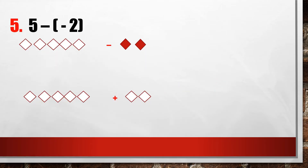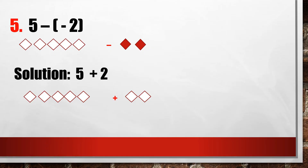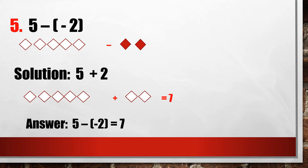Number 5: 5 minus negative 2. We have positive 5 as 5 non-colored tiles minus 2 colored tiles. Change negative 2 into positive 2 — the minus sign becomes plus. So it becomes 5 plus 2: using algebra tiles, 5 non-colored tiles plus 2 non-colored tiles equals 7. The answer is 5 minus negative 2 equals 7.